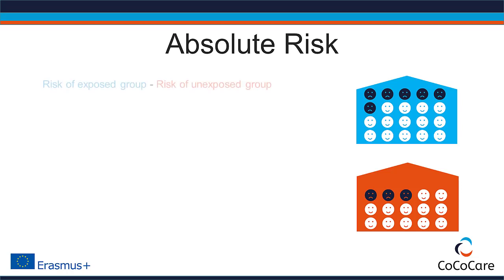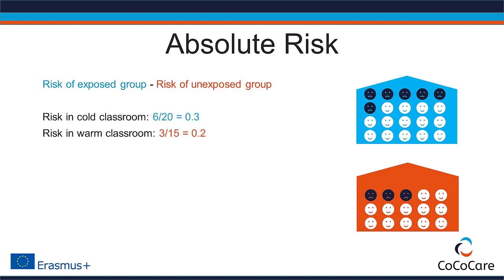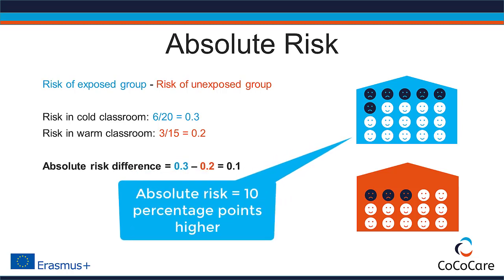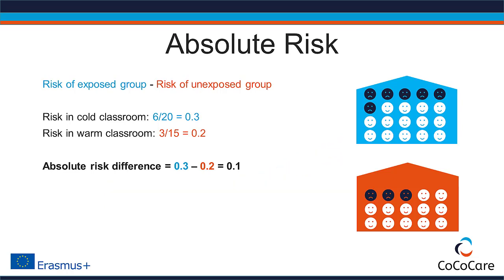The absolute risk difference can be calculated by simply subtracting one risk from the other. The absolute risk for children in the cold classroom is 0.3, and the risk for children in the warm classroom is 0.2. So the absolute risk in the cold classroom is 0.1, or 10 percentage points higher than in the warm classroom. In our example there's an increase in absolute risk; however, when reading clinical studies that investigate effects of medical interventions, you will most likely encounter absolute risk reductions.